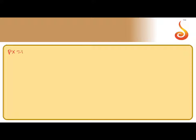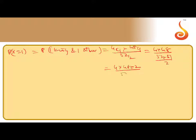P of X equal to 1, that is 1 king card, probability of 1 king and 1 other. That is 4 C1 into 48 C1 by 52 C2, 4 into 48 by 52 into 51 by 2. This is equivalent to, 4 1s, 4 13, 16, 17, that is 32 by 221.